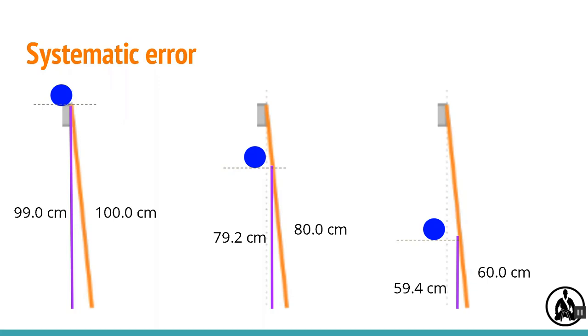Systematic errors often result from misplaced equipment, for example, a ruler clamped not vertically, a table that's not level, or a height that's measured from the wrong place.